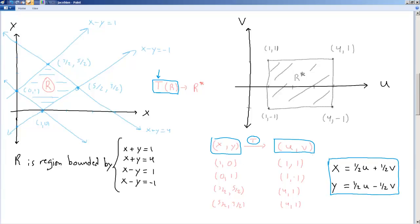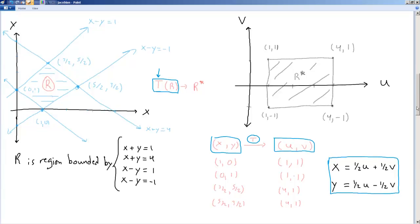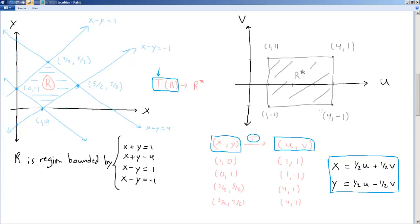So, 1, 0, I let x equal 1, y equal 0, I solve for u and v, and I get 1, 1, and I keep doing that for all the others. And I end up with these four points, I plot them, and there we go.